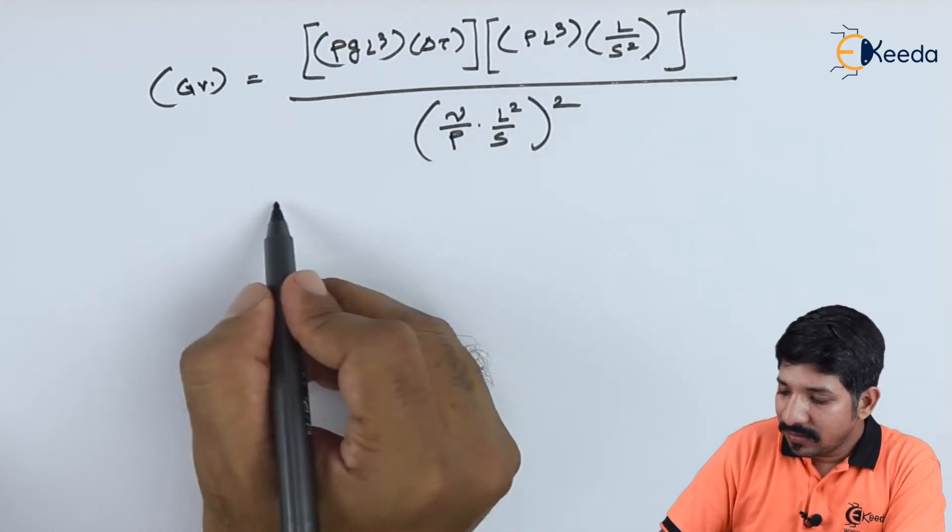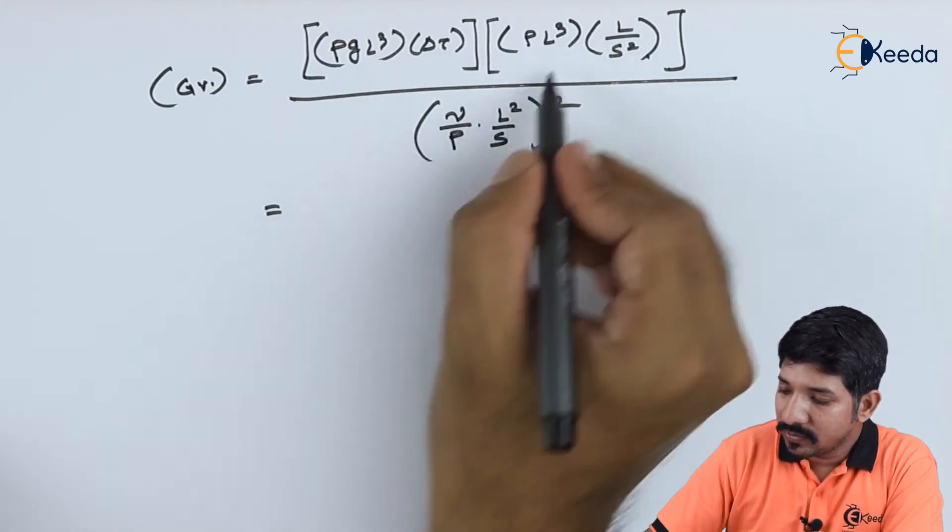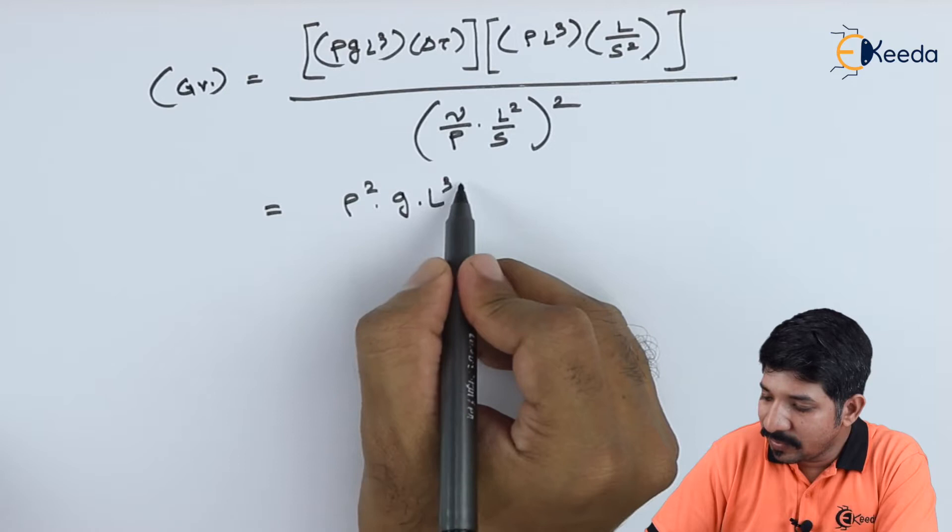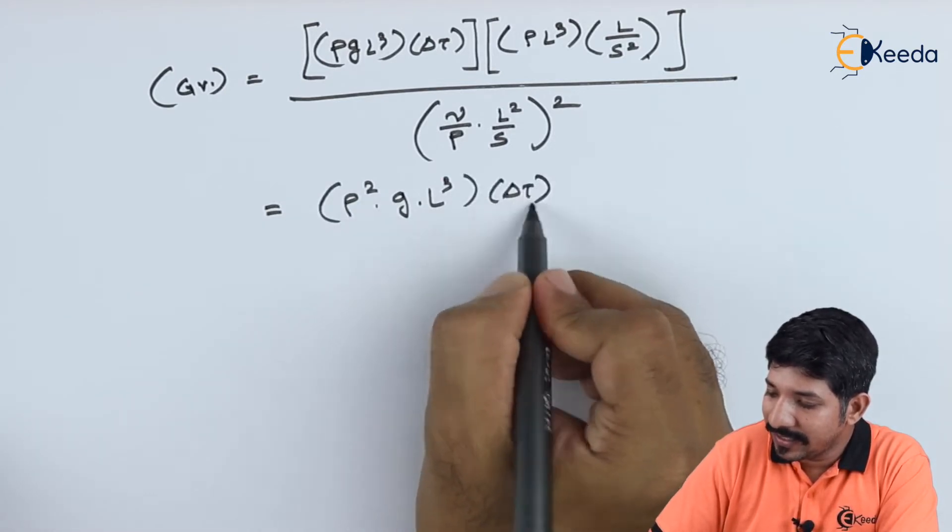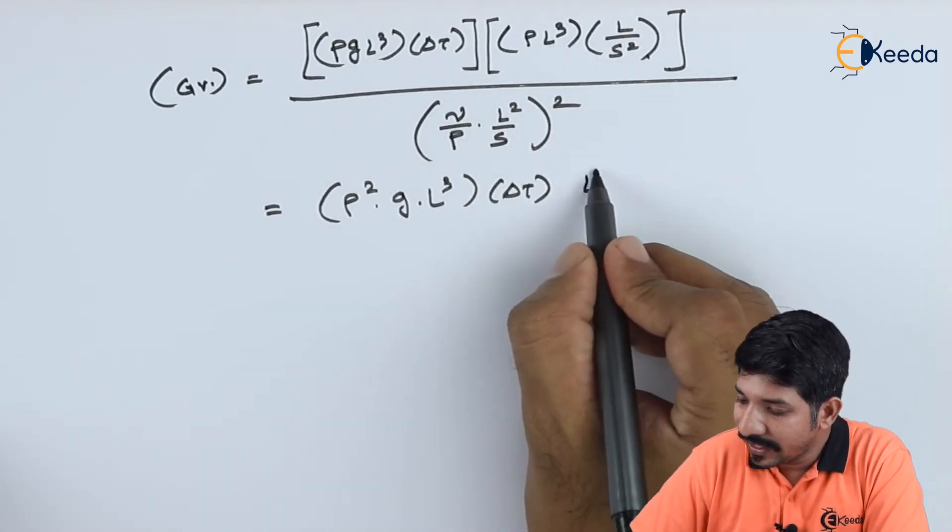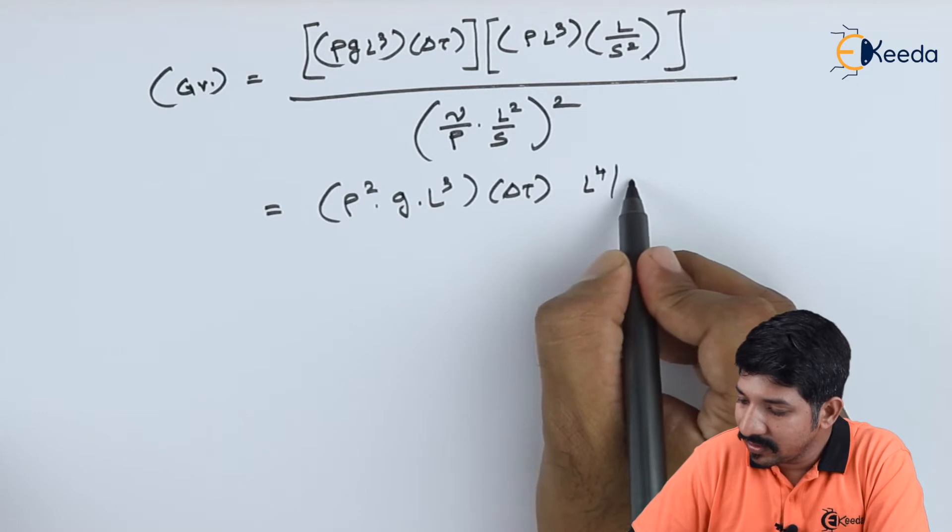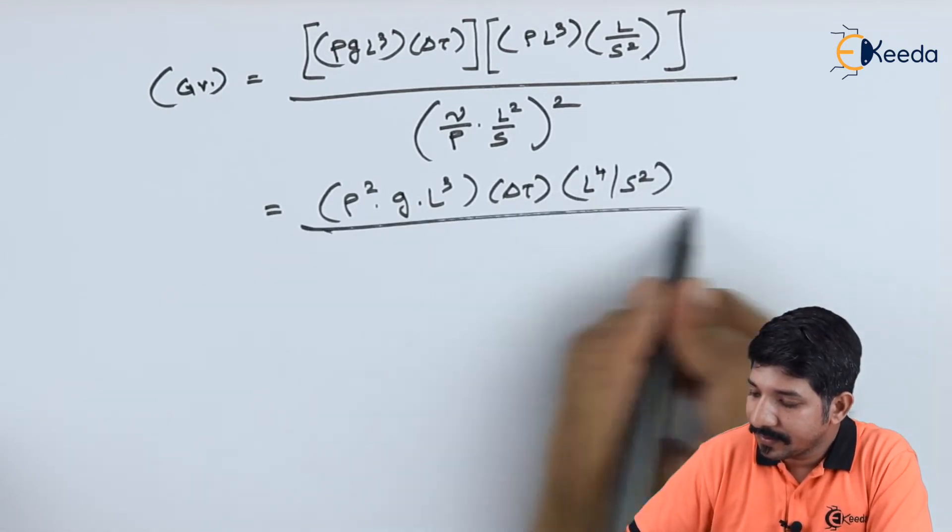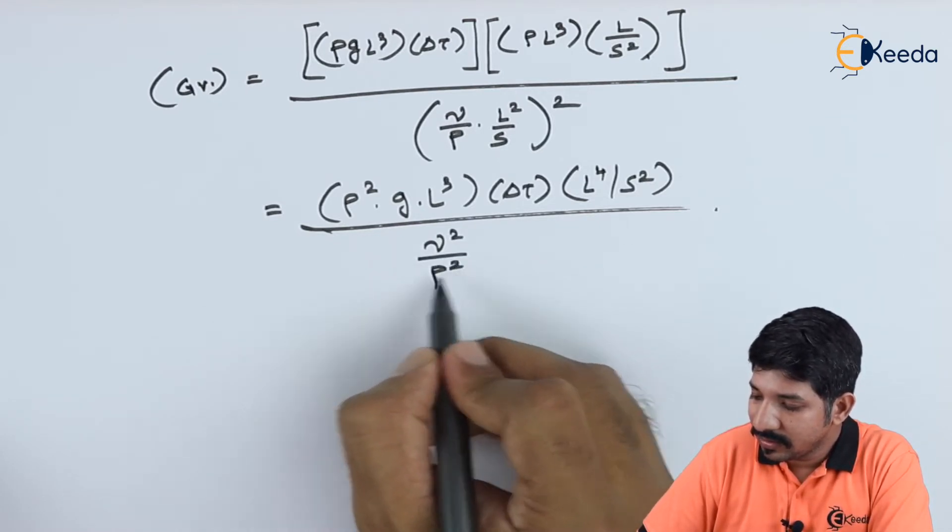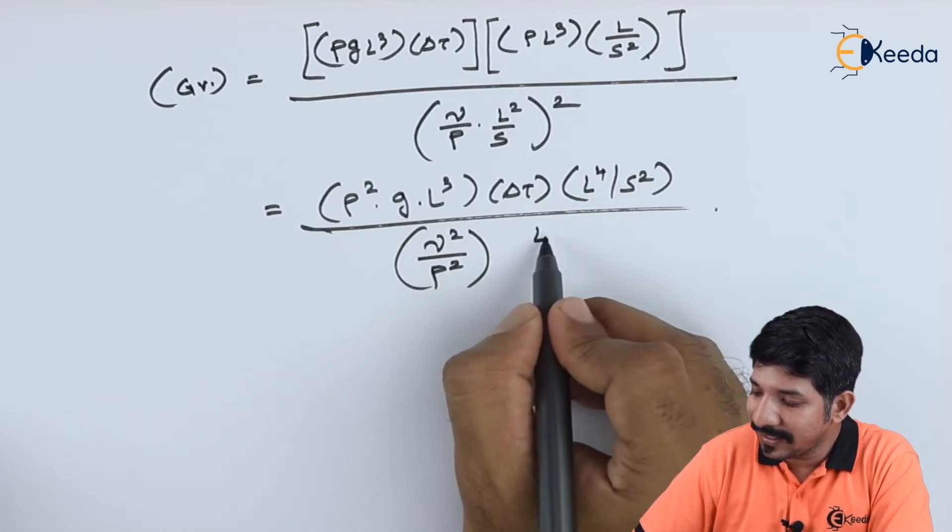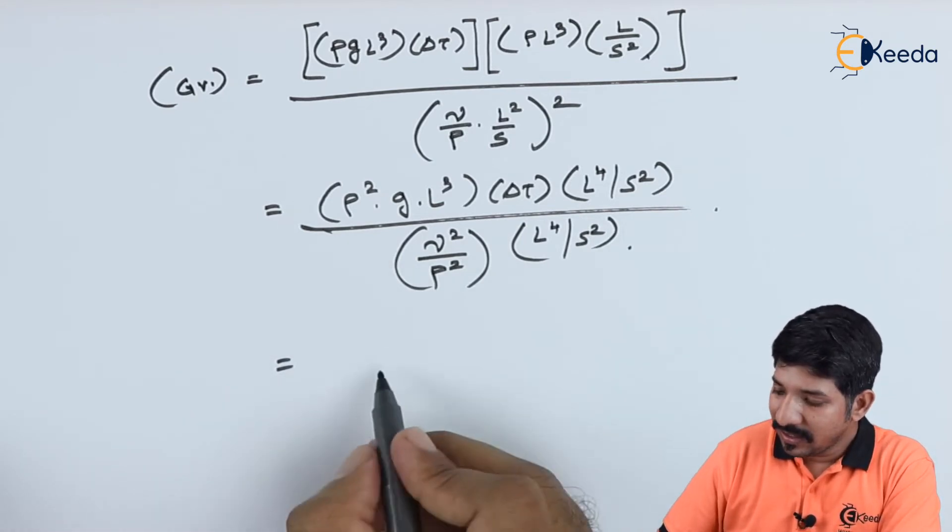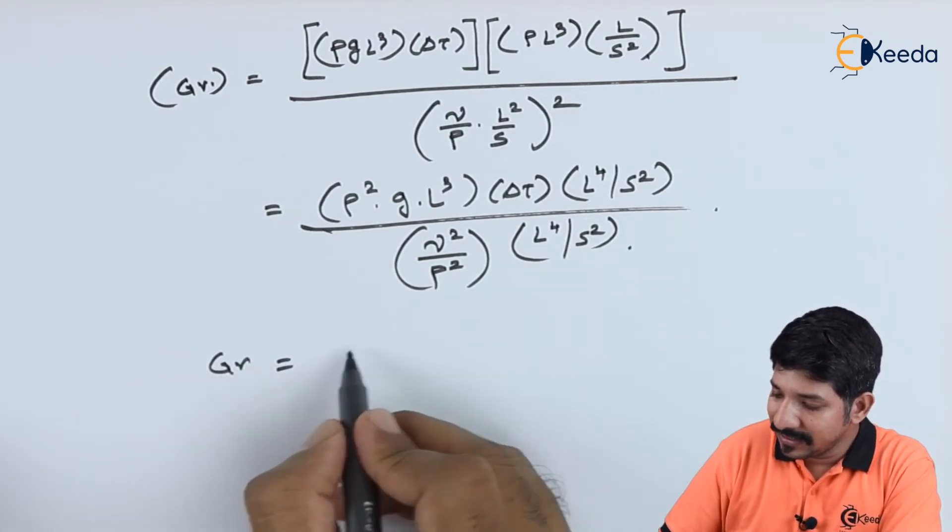Now, let us try and solve this and let us see what we are ending up with. So, obviously, this becomes density square into G. Let us keep this L cube as it is into beta delta t here. And, here also we got 1 L raise to 4 upon S square. Now, this divided by, again this is mu square upon rho square. And, this can be written as, again L raise to 4 upon S square. So, now, again if I start solving this, I can end up writing, this is nothing but.